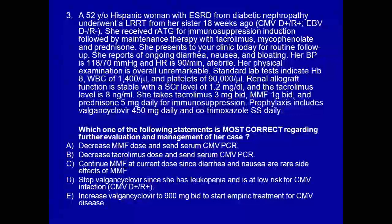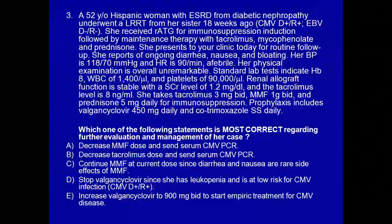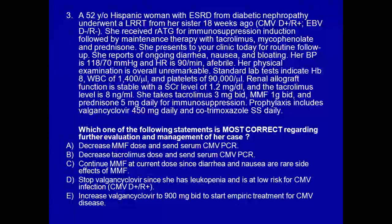Which of the following is correct: decrease the MMF dose and send serum CMV PCR; decrease tacrolimus dose and send serum CMV PCR; continue MMF at current dose since diarrhea and nausea are rare side effects; stop valganciclovir since she has leukopenia and is at low risk for CMV; or increase valganciclovir to start empiric treatment for CMV disease?